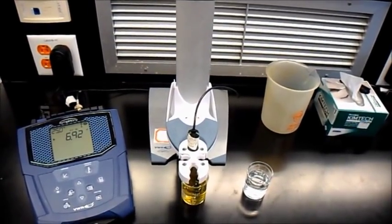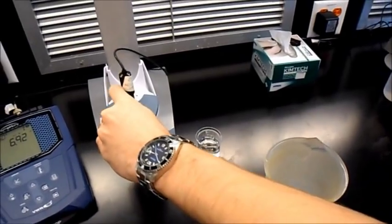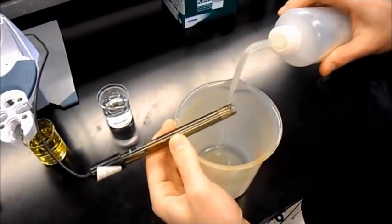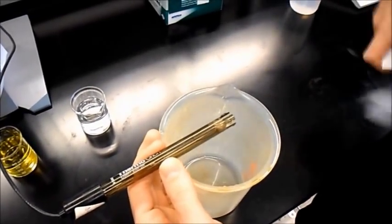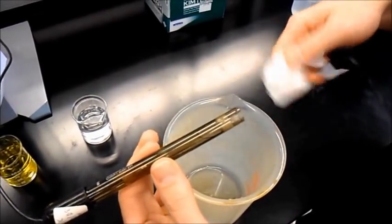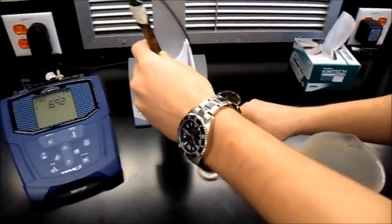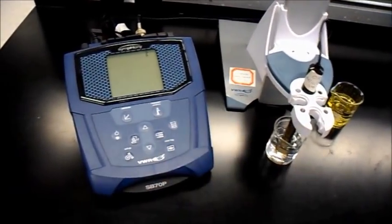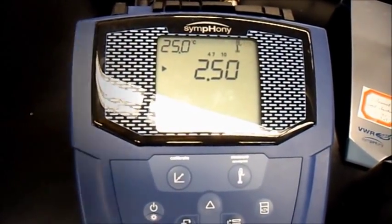This meter does not automatically record pH. To test a solution, rinse the probe and dab it dry. Then place the probe in your solution and hit the measure button on the pH meter. The meter will lock in its final reading.